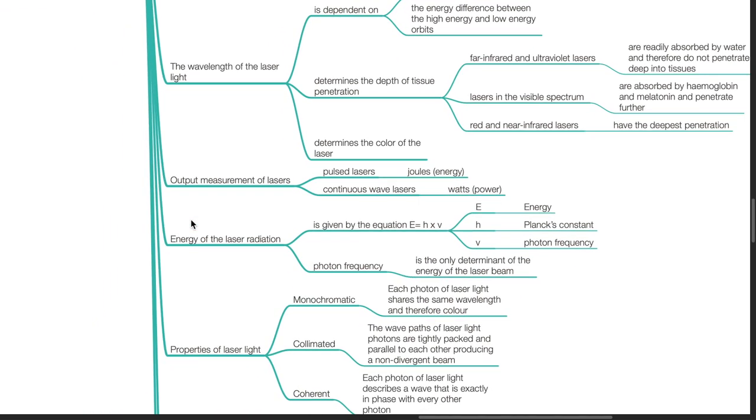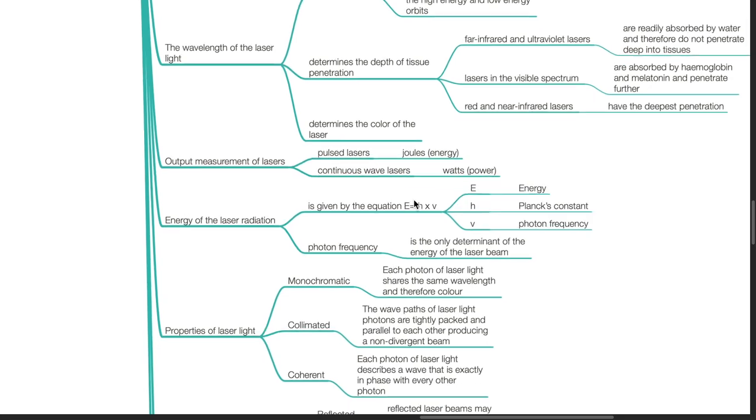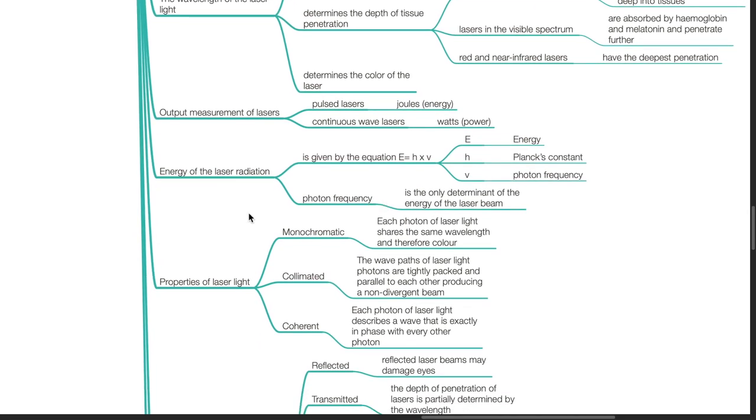Output measurement of lasers. For pulsed lasers, these are measured in joules. For continuous wave lasers, these are measured in watts. Energy of the laser radiation is given by the equation E equals H times V, where E is energy, H is Planck's constant and V is photon frequency. Photon frequency is the only determinant of the energy of the laser beam.